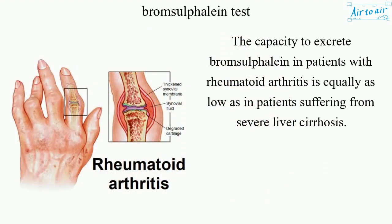The capacity to excrete Bromsulfaline in patients with rheumatoid arthritis is equally as low as in patients suffering from severe liver cirrhosis.